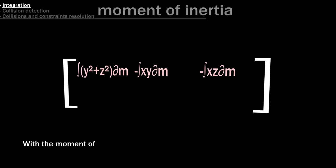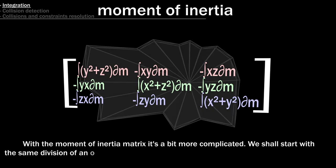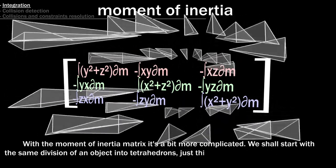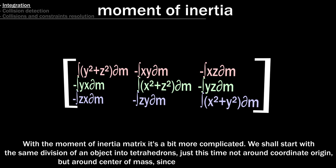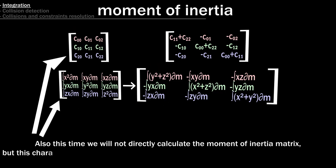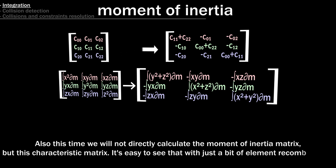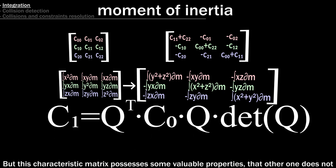With the moment of inertia matrix it's a bit more complicated. We shall start with the same division of an object into tetrahedrons, just this time not around coordinate origin, but around center of mass, since we have already calculated it. Also this time we will not directly calculate the moment of inertia matrix, but this characteristic matrix. It's easy to see that with just a bit of element recombination, the moment of inertia matrix can be calculated from it. But this characteristic matrix possesses some valuable properties, that other one does not.